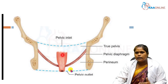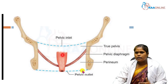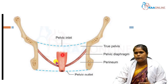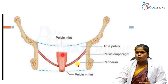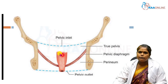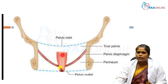The next blue color line is the pelvic outlet. The region below the pelvic diaphragm will be the perineum. The structures which lie in the pelvic cavity have to pierce the pelvic diaphragm to open in the perineum.